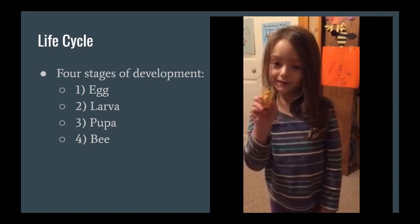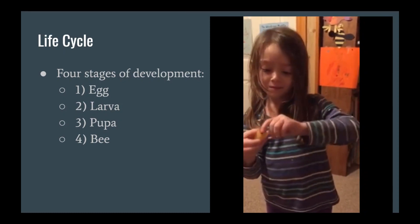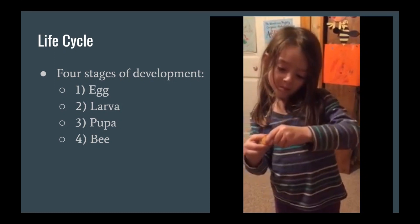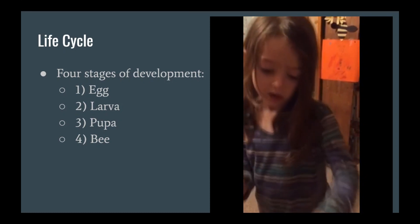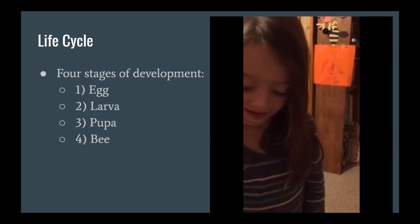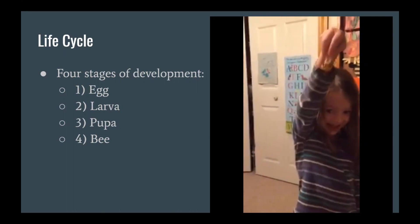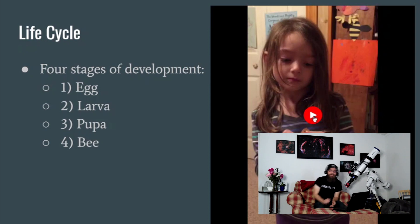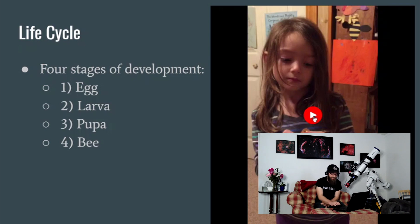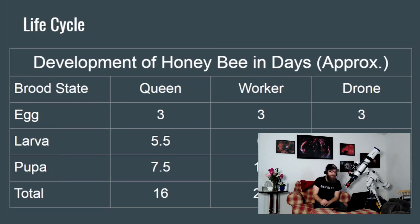And here's the pupa. As you heard, it was an egg, then it was a larva, then it was a pupa, and then it emerges as an adult bee.